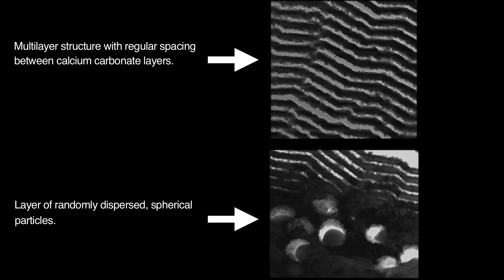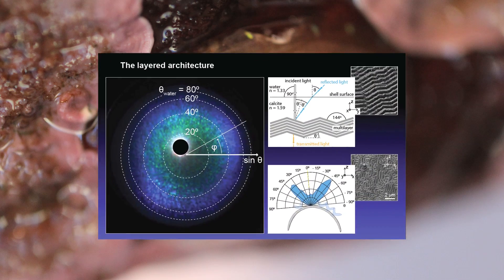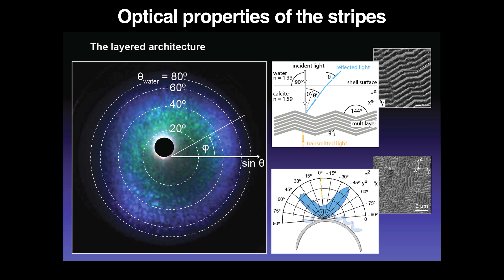Through a series of measurements and tests, the researchers found that the zigzag pattern acts as a filter, reflecting only blue light. As the rest of the incoming light passes through the shell, the underlying particles absorb this light, an effect that makes the shell's stripes appear even more brilliantly blue.